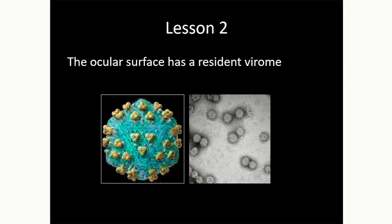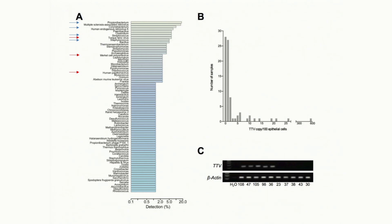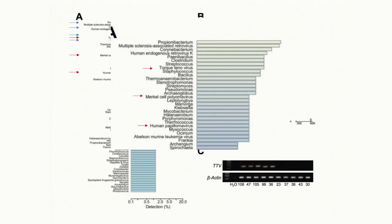Our foray into finding a brave new world in the conjunctiva didn't yield much bacterially. But what we did find through BRISK was surprising: the ocular surface actually has a resident microvirome. BRISK is agnostic to DNA source, so we can find bacterial, viral, or any DNA. When we ran through our samples, alongside our propionibacteria, Corynebacteria, strep, and staph, three viruses showed up in substantial numbers of samples: Torque teno virus, Merkel cell polyomavirus, and HPV. The TTV was confirmed in a validation set of 10 samples — five where we found it, five where we didn't — by direct PCR.